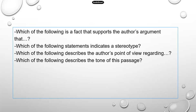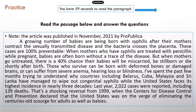Before the practice, here are some common questions you may see on the TEAS. For instance: 'Which of the following is a fact that supports the author's argument?' — asking what evidence supports the author's position. 'Which of the following statements indicates a stereotype?' 'Which of the following describes the author's point of view regarding a subject?' And 'Which of the following describes the tone of the passage?' This is a long passage, so I've put it on a slide without any questions. I'll give you about a minute to read it, and then I'll show you the questions.